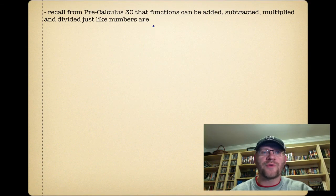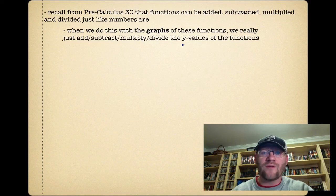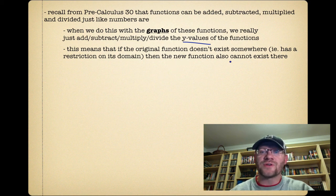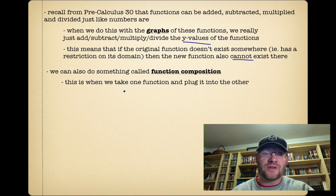Recall from pre-calculus 30 that functions can be added, subtracted, multiplied, and divided, just like numbers are. When we do this with the graphs of these functions, we really just add, subtract, multiply, and divide the y-values. This means that if the original function doesn't exist somewhere — i.e., has a restriction on its domain — then the new function also cannot exist there. We can also do something called function composition, and that's when we take one function and plug it into the other.